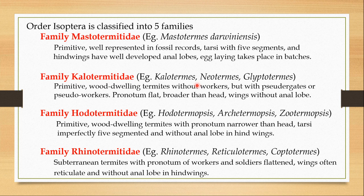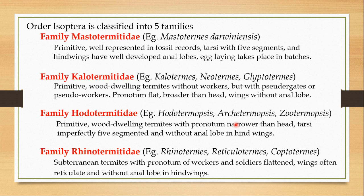In family Kalotermitidae the pronotum is flat and broader than the head, while in family Hodotermitidae the pronotum is narrower than the head. The pronotum is the dorsal tergum of the prothorax. Both Kalotermitidae and Hodotermitidae are wood-dwelling and all of them do not have the anal lobe in hind wings. In Hodotermitidae, the tarsi are imperfectly five-segmented, meaning that the second segment of the tarsi is reduced, which is why they are known as imperfectly five-segmented.